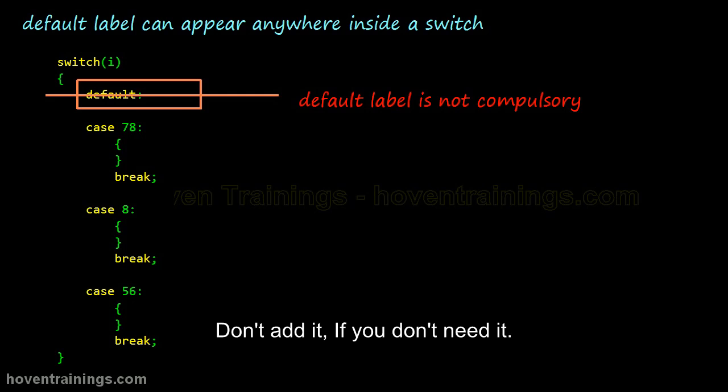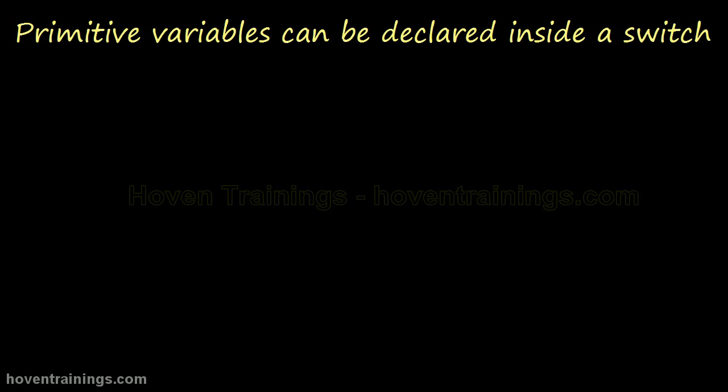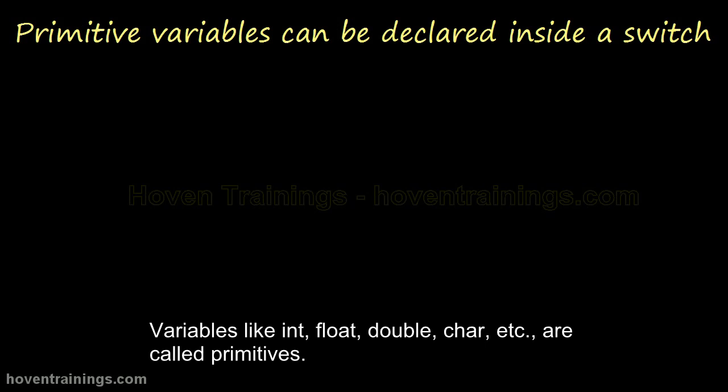Variables like int, float, double, char, etc. are called primitives.